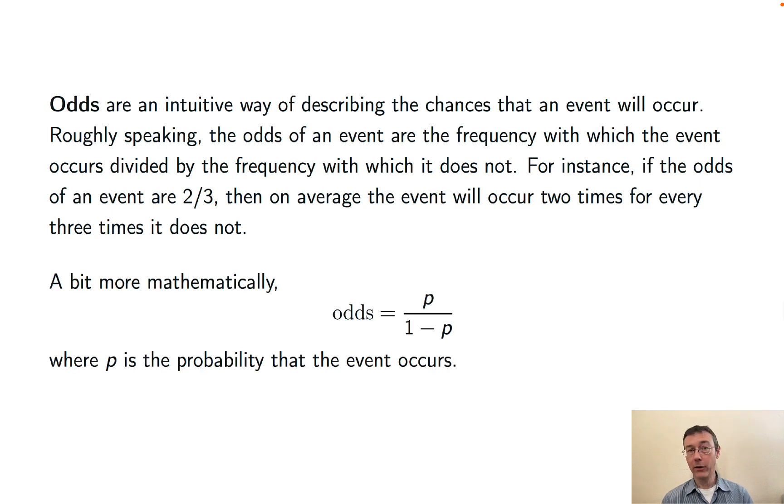Here's a slightly more mathematical definition: the odds of an event are p divided by one minus p, if p is the probability that the event is going to occur.